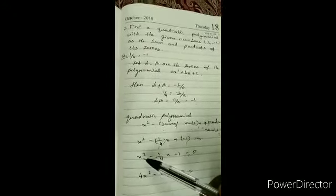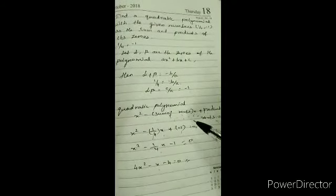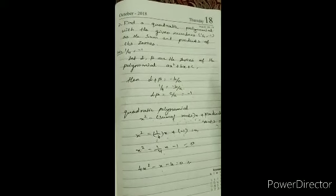Now take LCM 4, or multiply throughout by 4: 4x square minus 1x minus 4 equals 0. So sum of zeros alpha plus beta equals minus b by a, product of zeros alpha into beta equals c by a, and the quadratic polynomial is x square minus sum of zeros into x plus product of zeros equals 0. Tomorrow let's meet with one different type.